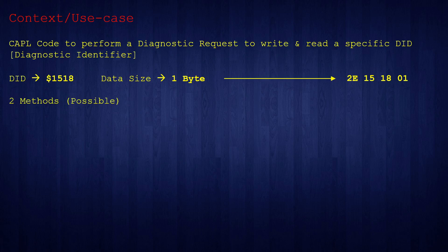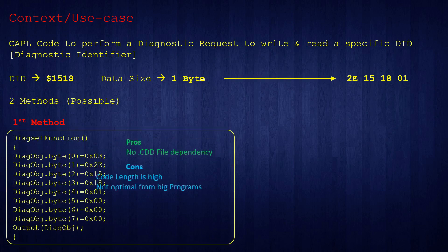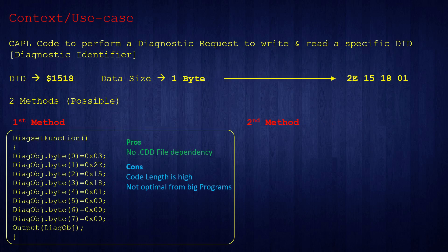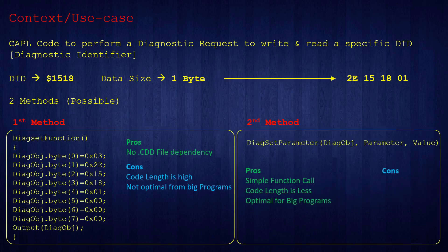For this kind of use case, you can follow two methods. The first method is by sending the data byte by byte in your CAPL code, which doesn't need any .CDD file, but the code length will be high and you will have some limitations with bigger programs. The second method is by calling the DIAC functions through DiagSetParameter function calls, which needs a .CDD file, but the benefit is your code length will be optimal and best suited for bigger programs. In this video we will be looking into the second method in detail with a live example.